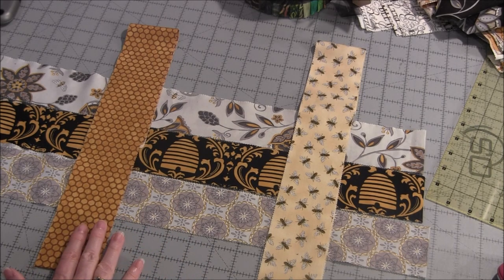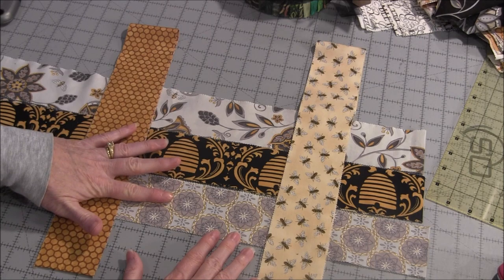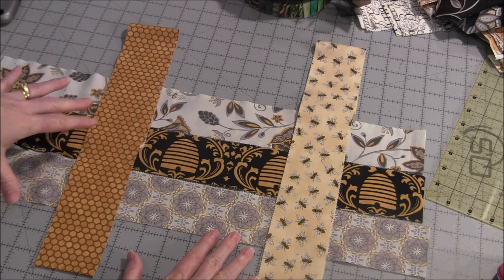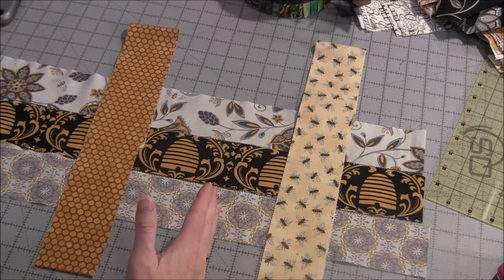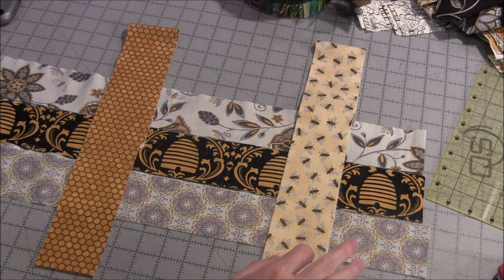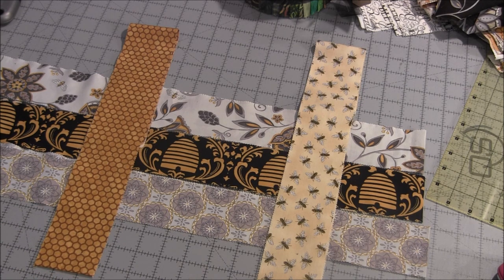And so to start this project, we will sew together the three strips together into one big long strip, and then we'll sub-cut it into sections which then we will add the side strips onto it. So let's go over to the sewing machine and sew these strips together.